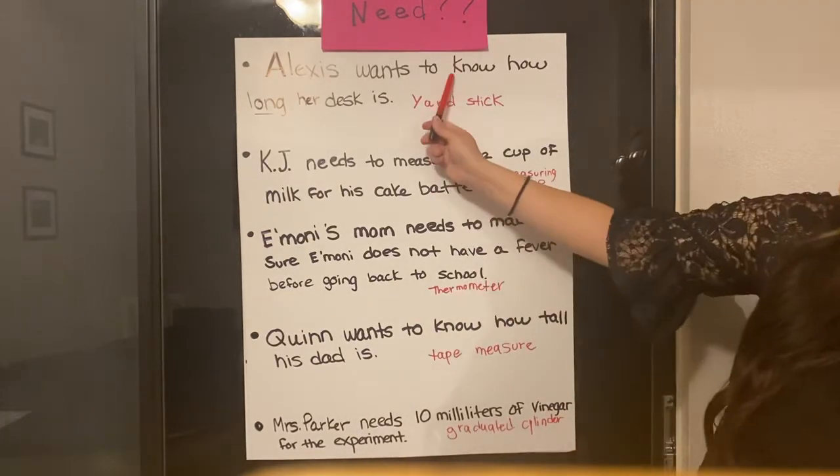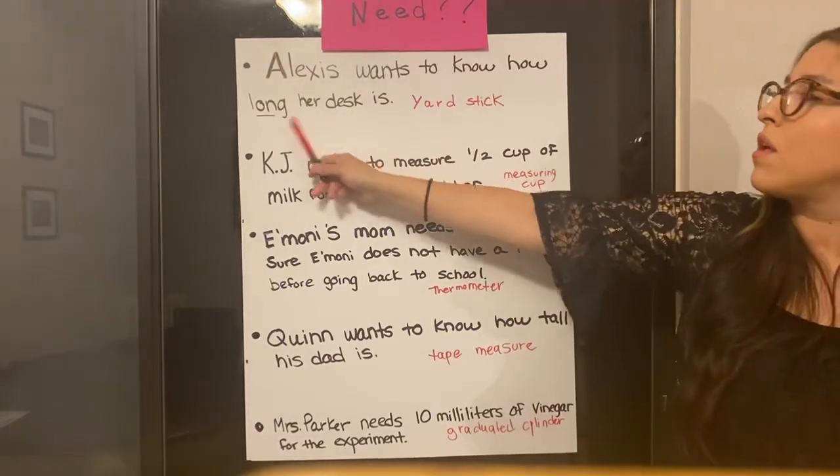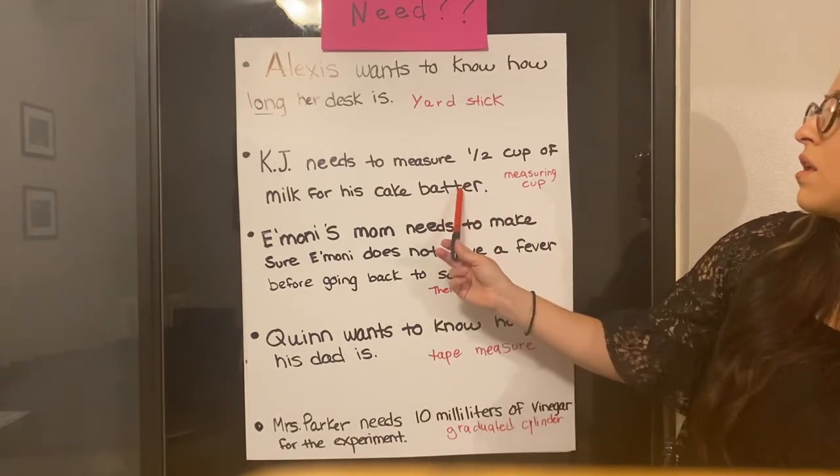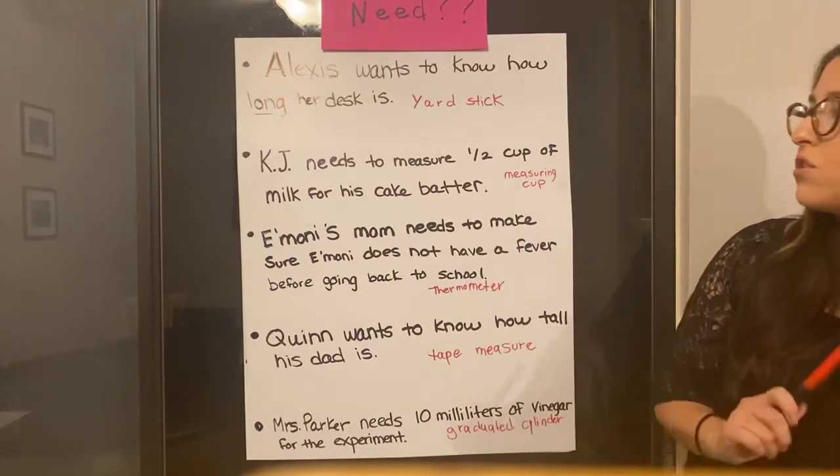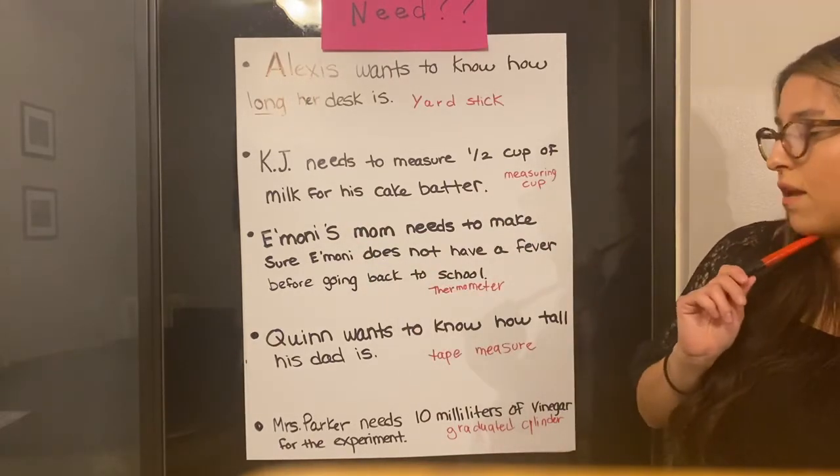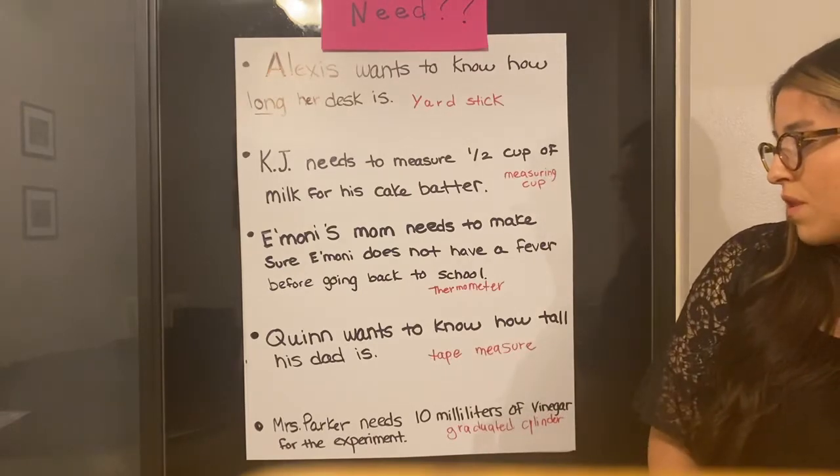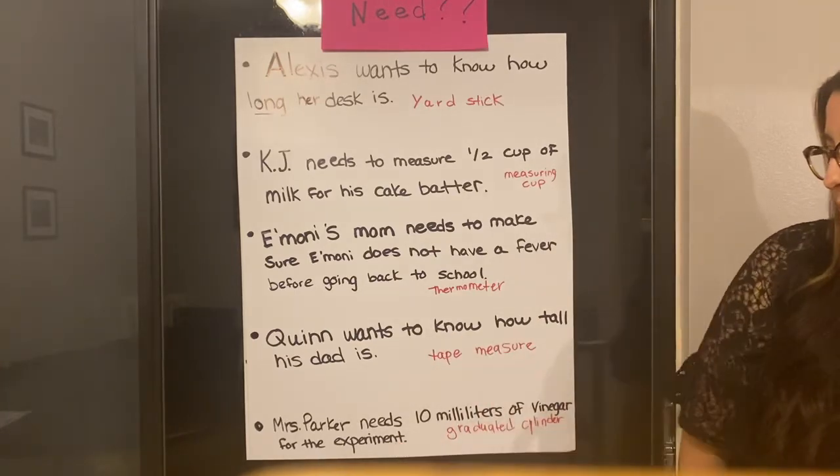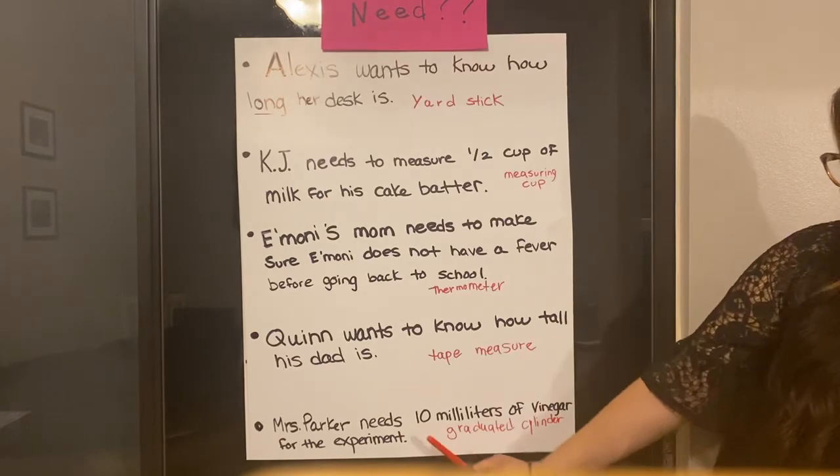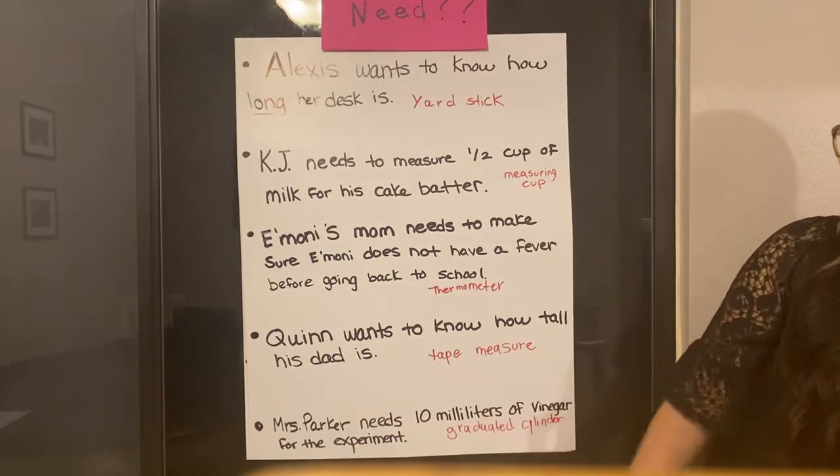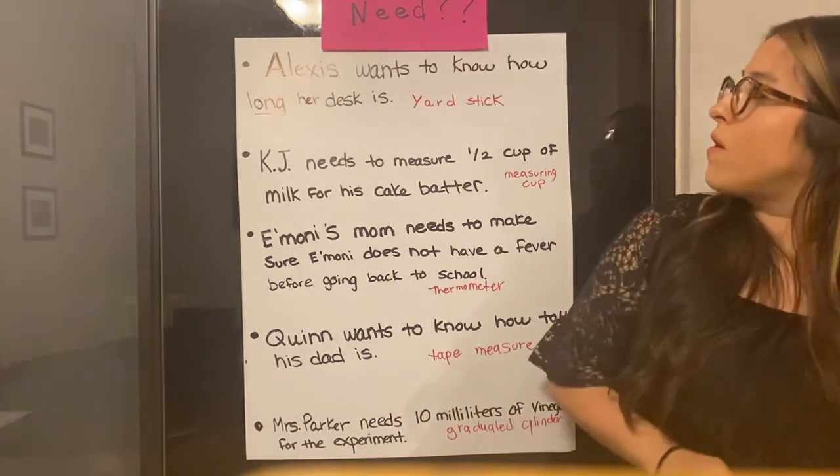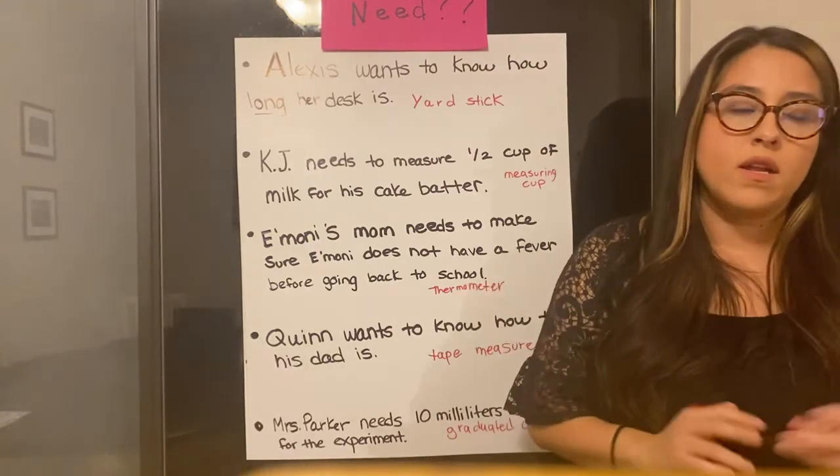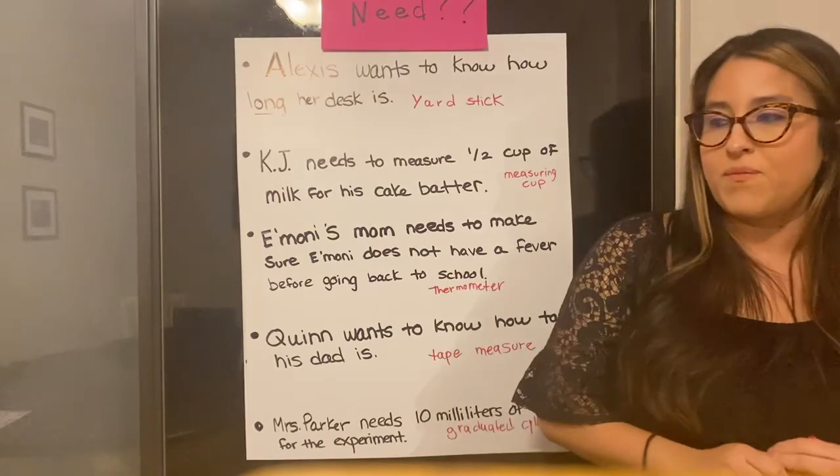So we have measured the length of the desk with a yardstick. We measured the liquid volume of his milk with a measuring cup. We measured Imani's temperature with a thermometer. We measured Quinn's dad, we measured his length with a tape measure. And we measured Mrs. Parker's vinegar, we measured the liquid volume of the vinegar with a graduated cylinder. So now that we know all about our different measurement tools, we are going to go into groups and practice measuring some stuff. All right. Thank you.